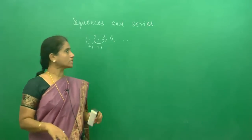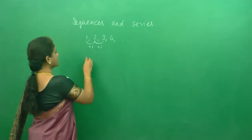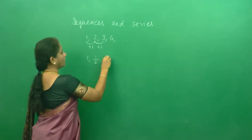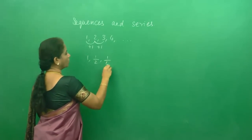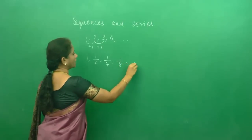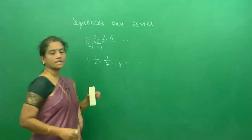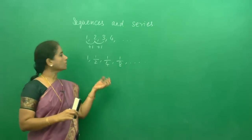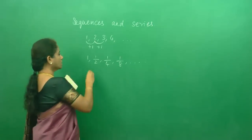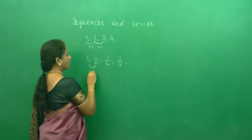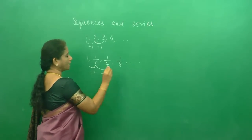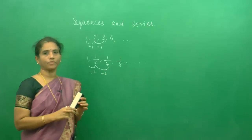For example, if you consider 1, 1/2, 1/4, 1/8, etc., even this is a sequence. Why is it a sequence? Because each number is divided by 2 to get the next number.